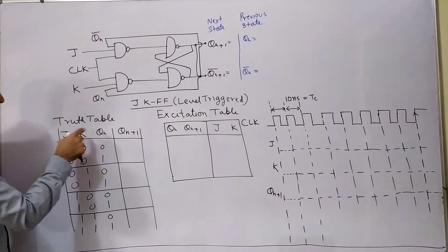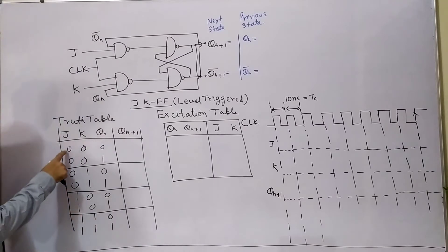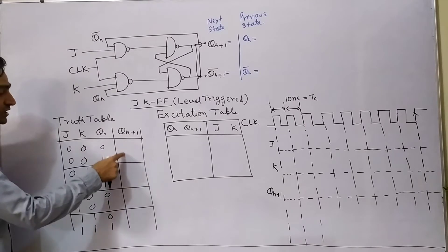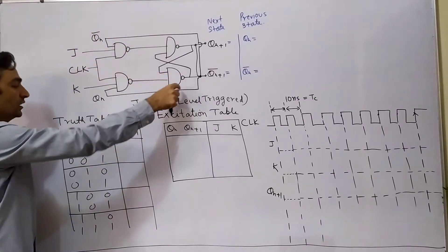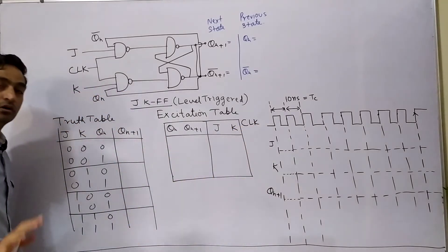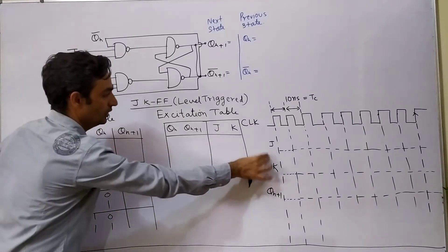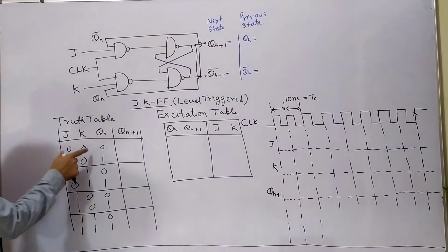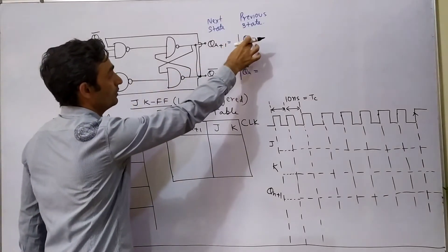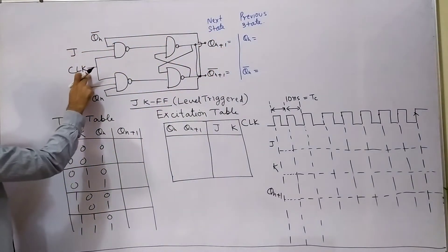This is our truth table indicating the functionality of JK flip-flop. Whenever J and K are both 0,0, QN is the previous state. We want to find the next state. We know the circuit diagram. We want to find the truth table, excitation table, and timing diagram — these are the learning outcomes of this class. Let's say J, K and QN are all 0, 0, 0. This is the previous state; the next state is what we want to find. J and K are the inputs, and clock is level-triggered.